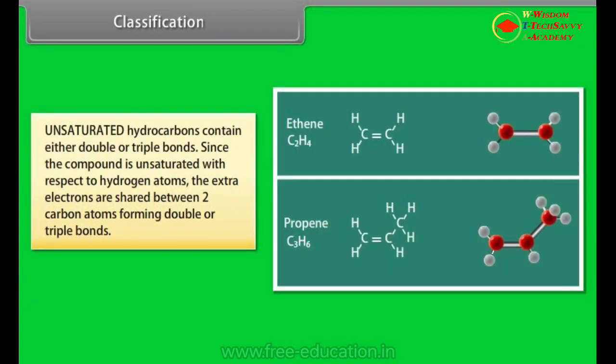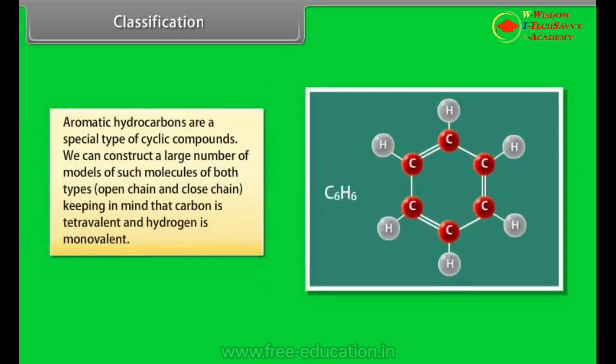Unsaturated hydrocarbons contain either double or triple bond. Since the compound is unsaturated with respect to hydrogen atoms, the extra electrons are shared between two carbon atoms forming double or triple bonds. Aromatic hydrocarbons are a special type of cyclic compounds. We can construct a large number of models of such molecules of both types, open chain and closed chain, keeping in mind that carbon is tetravalent and hydrogen is monovalent.